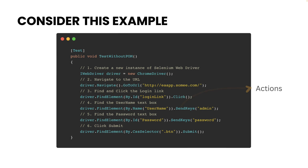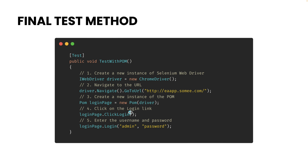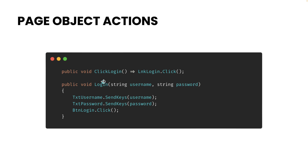The question is how will the test look once everything is modified with the new page object model code. The code then turns out to be much simpler — you initialize the driver, navigate to the URL, initialize the page, and then perform operations without any locators directly in the test. Methods like clickLogin and login encapsulate all the locator logic. The login operation calls three different sub-operations in one single method. I will show you all these things in a demo.